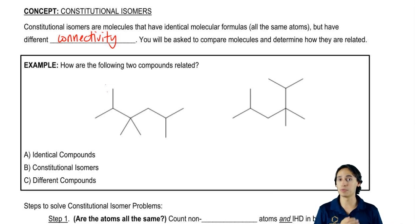For this course, you're going to have to be able to look at two different compounds and tell what is that relationship. Are they the same compound, meaning everything is exactly the same in terms of the molecular formula and connectivity, or are they completely different compounds, meaning they have different atoms entirely.